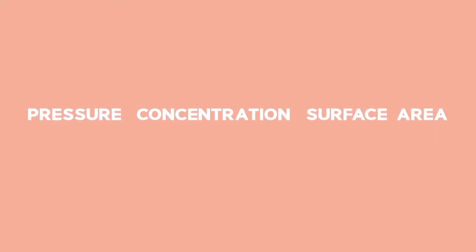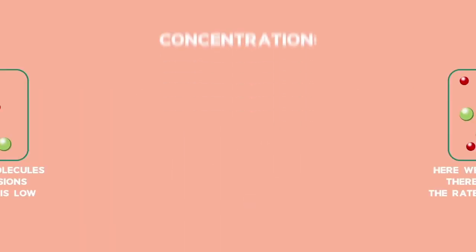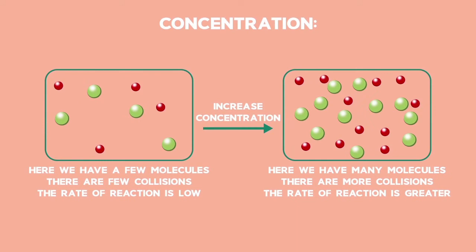But what about pressure, concentration, and surface area? These also affect the rate of reactions. But how do we explain those in terms of collision theory? Concentration: An increase in concentration means there are more particles. More particles means that there will be more collisions in the same volume of reaction. This should increase the reaction rate.